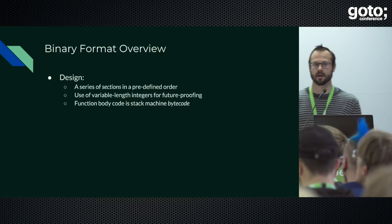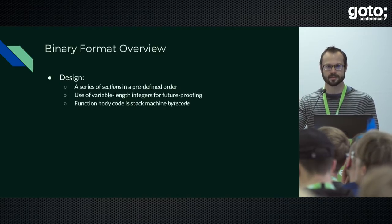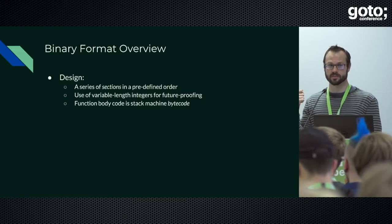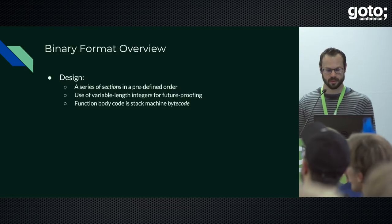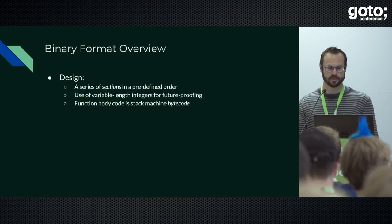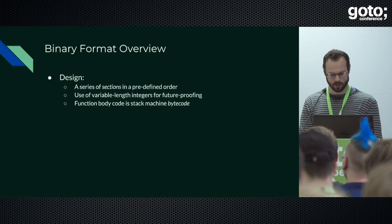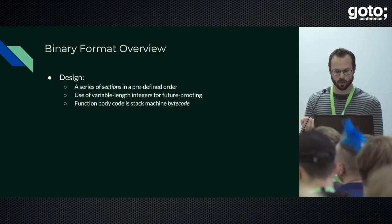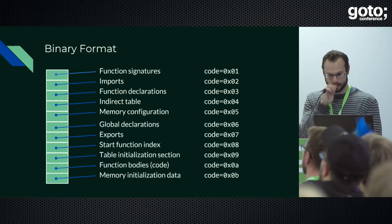Regarding the binary format: you don't have to memorize this, and hopefully you're not actually writing WebAssembly using raw bytes. It's basically very simple — just a series of sections that come in a specific order. Each section has a byte which tells you what type it is. We use variable-length encoding, which gives us future-proofing. We're basically limited to four-gigabyte modules now, but you can imagine those limits going away over time. Function bodies — the code — are a stack machine represented as bytecode, so it's very dense.